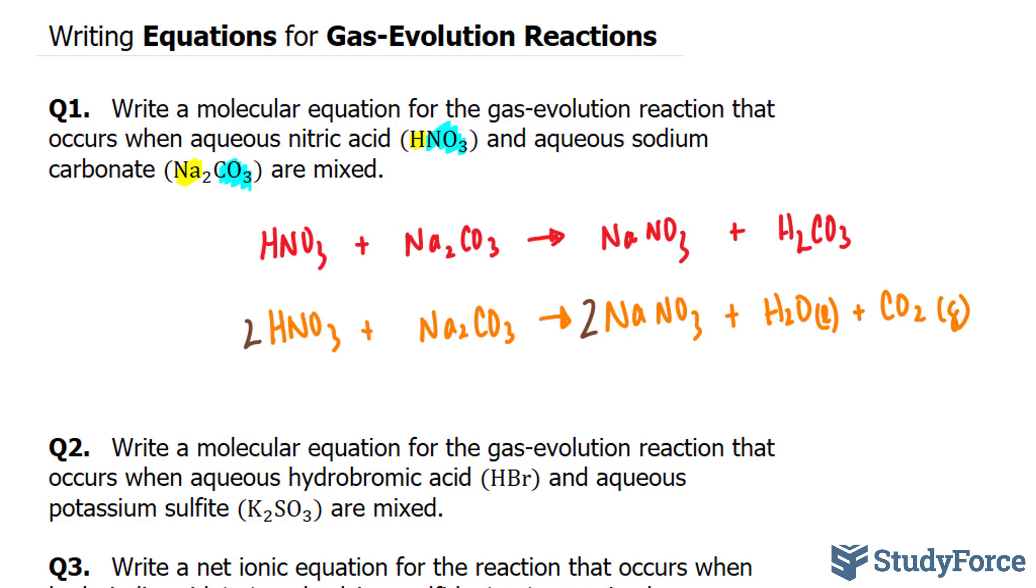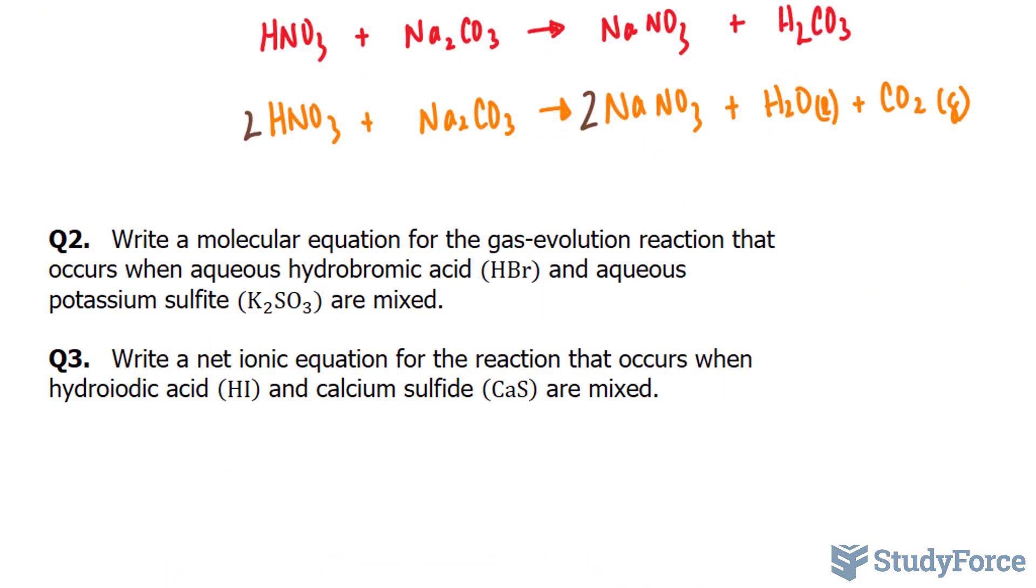Let's move on to question number 2. In question number 2, we're asked to write a molecular equation for the gas evolution reaction that occurs between hydrobromic acid and aqueous potassium sulfite, and the chemical formulas of both are shown underneath.